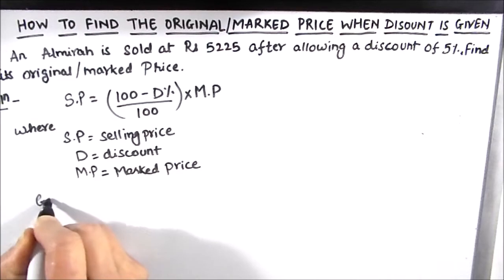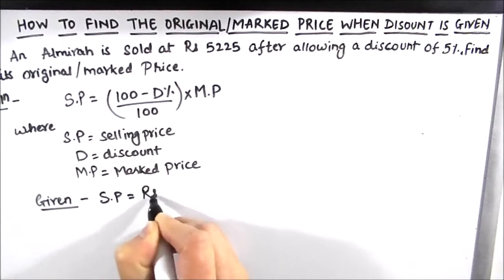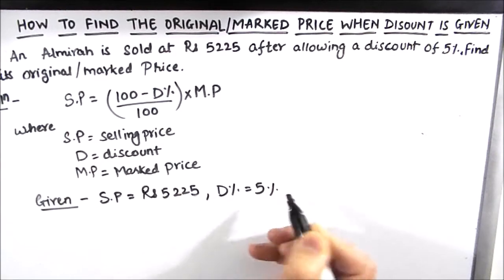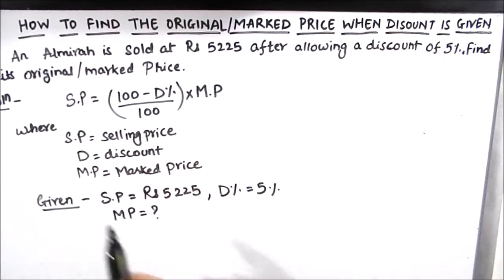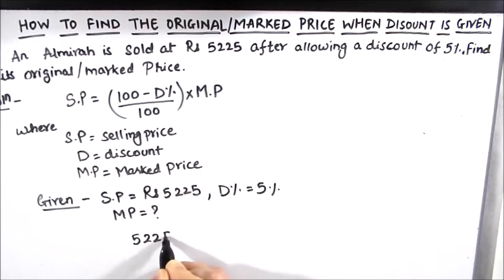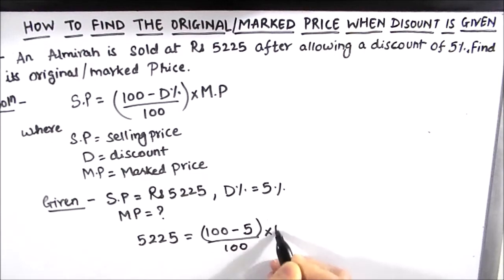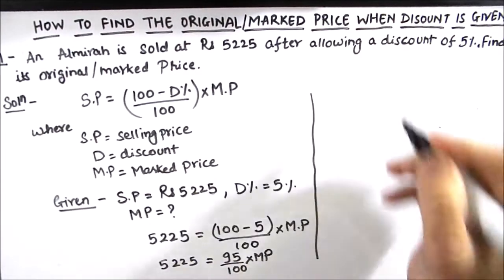Now let us write what is given in the question. Selling price is given as rupees 5225, discount percentage is given as 5 percent, and marked price is what we need to find out. Let's substitute the values in the formula: 5225 is equal to (100 minus 5) divided by 100, times marked price.